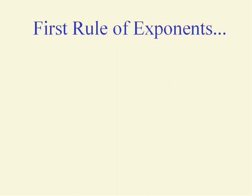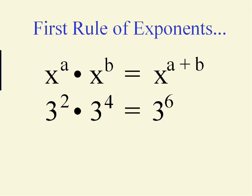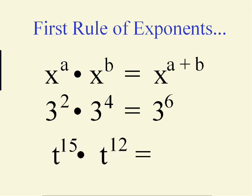There is a rule for this — a shortcut called the first rule of exponents. x to the a times x to the b: if you have two expressions with the same base and you multiply them with exponents, you add the exponents. Three to the second times three to the fourth equals three to the two plus four, or three to the sixth. For example, t to the fifteenth times t to the twelfth equals t to the twenty-seventh, because fifteen plus twelve is twenty-seven.